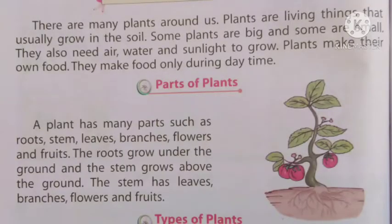There are many plants around us. We have several plants. Plants are living things that usually grow in the soil. पौधे जीवित चीज़ें हैं जो आम तौर पर मिट्टी में बढ़ते हैं। Some plants are big and some plants are small. कुछ plants बहुत बड़े होते हैं और कुछ छोटे होते हैं।